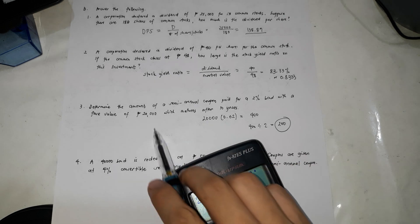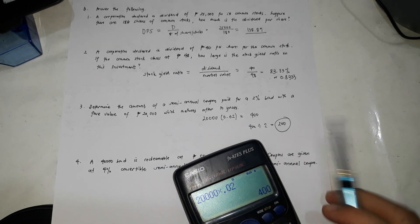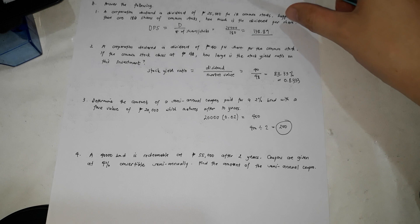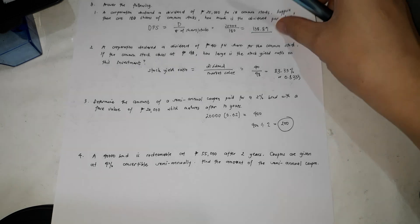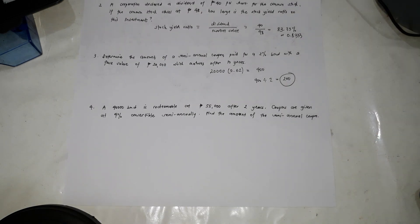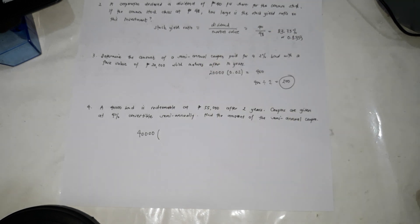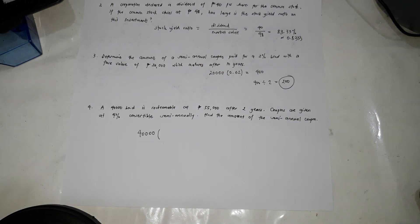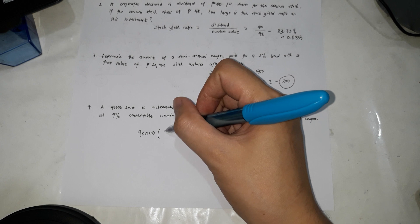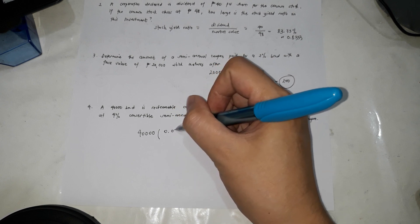So before you're going to receive 20,000, you're going to receive 200 pesos semi-annually. So the last problem is a 40,000 bond is redeemable at 55,000 after two years. Coupons are given at 4% convertible semi-annually. Find the amount of the semi-annual coupon. So what you're going to do in here is this one. So 40,000, just multiply it by the coupon, which is 4%. So 4% is 0.04.